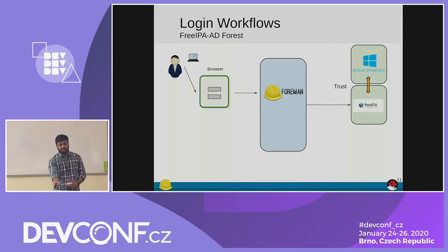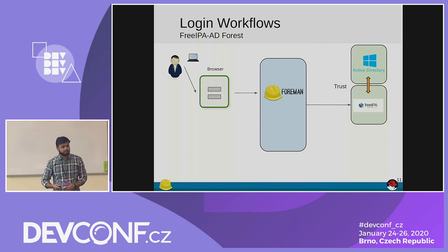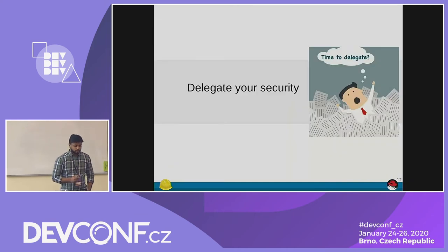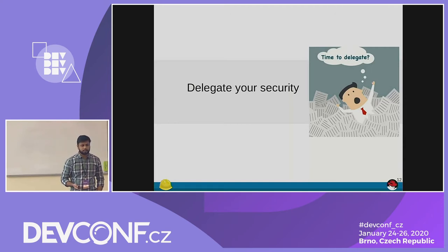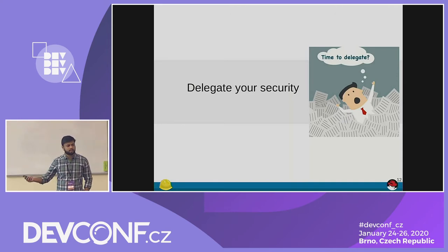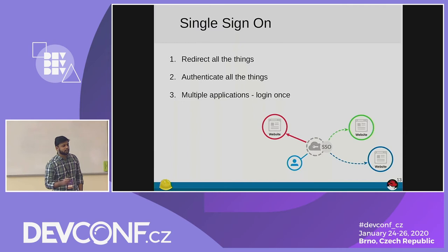And last but not least, if you want to have FreeIPA and Active Directory in the same environment, you can have FreeIPA in trust with Active Directory and log in through Foreman. But the problem is we can't bind our application to a particular identity provider — in this case it's FreeIPA. You need some application where you can do multiple things, where you have an OpenID provider and your user will get logged in through that. So that's why single sign-on came into the picture.